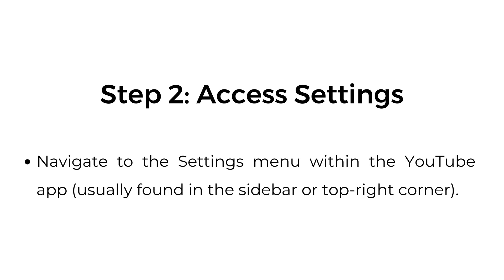Step 2: Access settings. Navigate to the settings menu within the YouTube app, usually found in the sidebar or top right corner.